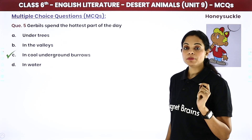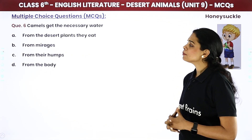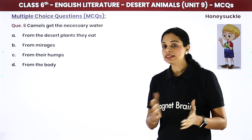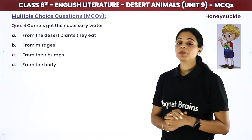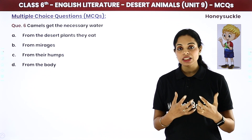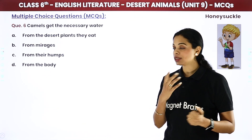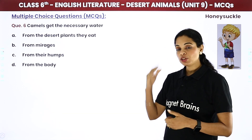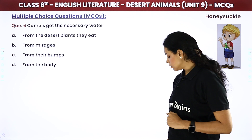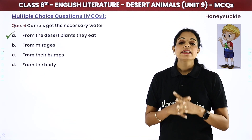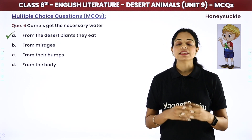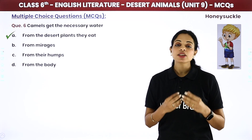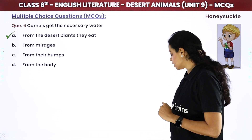Camels get the necessary water — camels को जितना पानी चाहिए वो पानी उनको किस चीज़ से मिल जाता है? Options: from the desert plants they eat, from mirages, or from their humps. The answer is from the desert plants — जैसे cactus — जब वो इनको खाते हैं, तो इसमें जो पानी होता है, उससे उनकी प्यास बुझ जाती है।